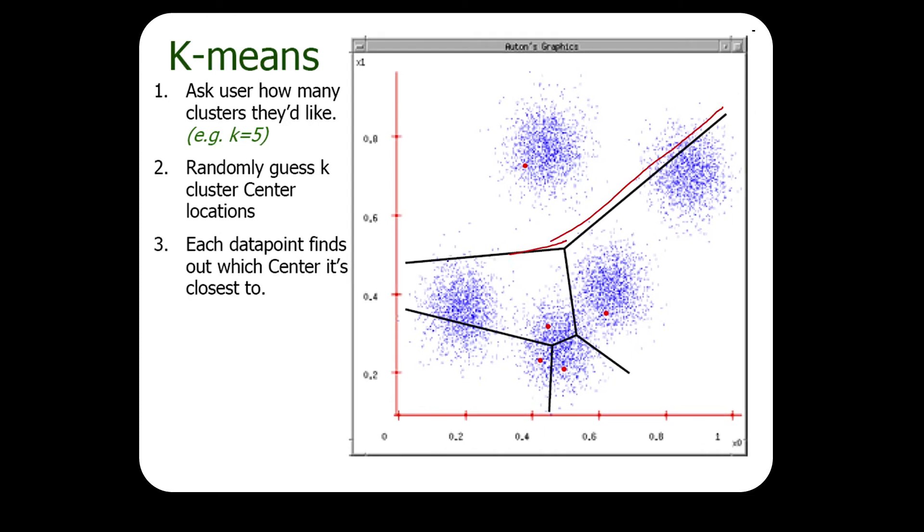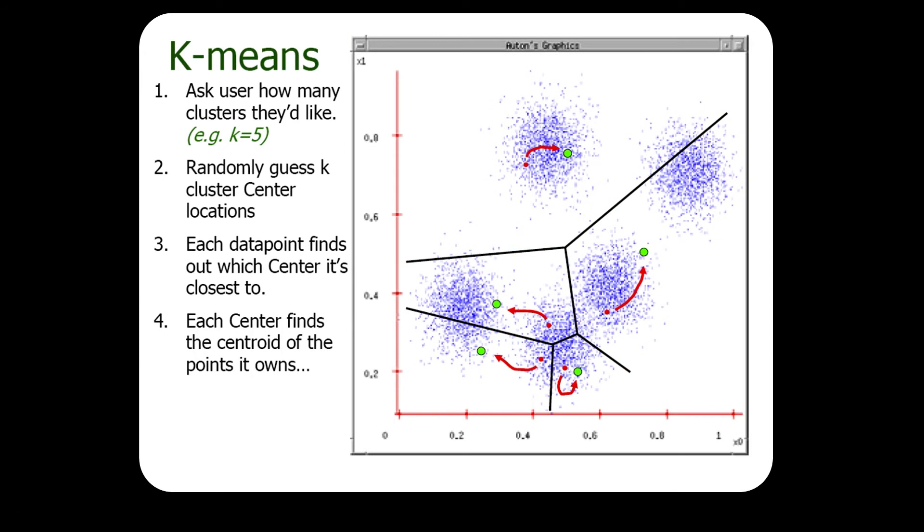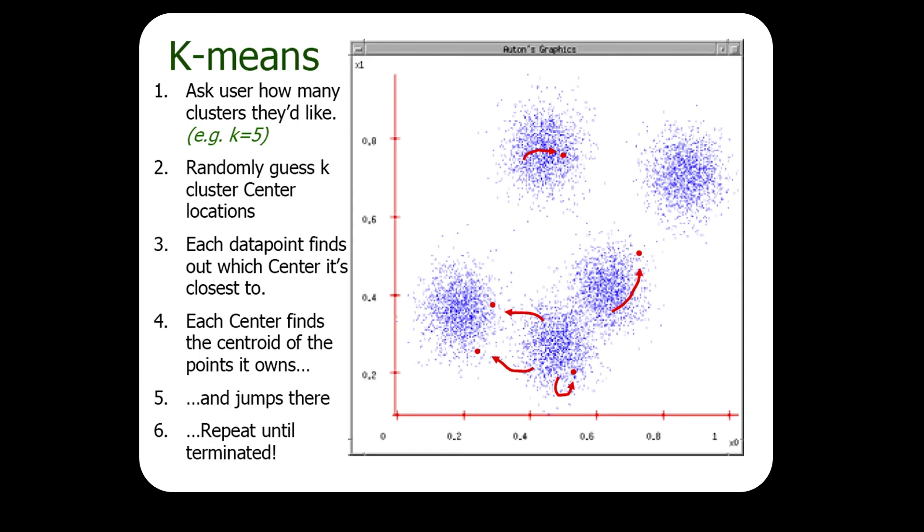So those of you from computer science recognize this Voronoi diagram. This is the fracturing of the space, such that this line says that everything here is closest to that point more than any other point. And so once we have those assignments, what we can do is we move the centers to be at the center of the points that were assigned to that cluster. And then we iterate, all right? And we repeat that until it terminates.